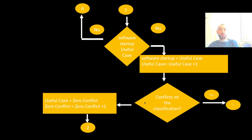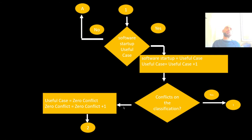If there is a conflict in the classification, we ignore that case and move to the next one. If there is no conflict, then this useful case has zero conflicts and we increment another counter. The final output is organized into short-term and long-term categories.